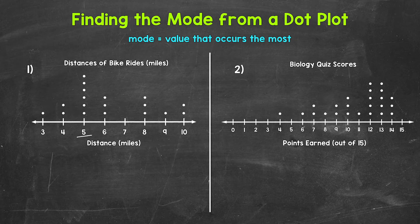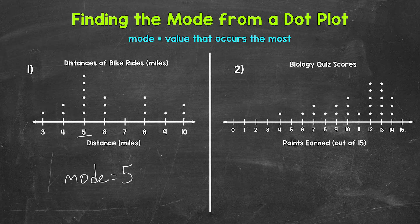Five miles. That distance occurred six times. We have six dots above five — that's the distance that occurred the most. So the mode is five miles.